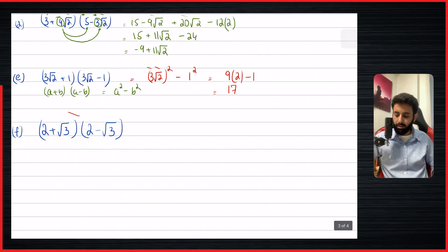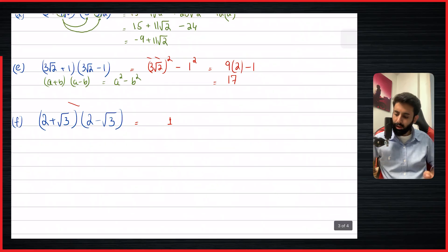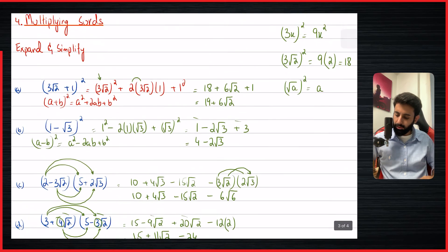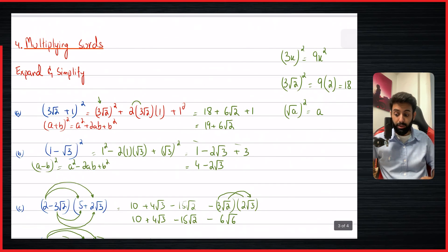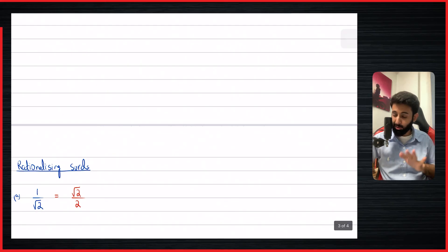I encourage you to try the next one yourself and check with a calculator. The final answer is 1 — expand it and see if you get that. So that's it for this video. We've learned how to multiply surds: expand and simplify. In the next video we'll learn how to rationalize surds, which is perhaps the most important part. See you in the next one — take care, bye.